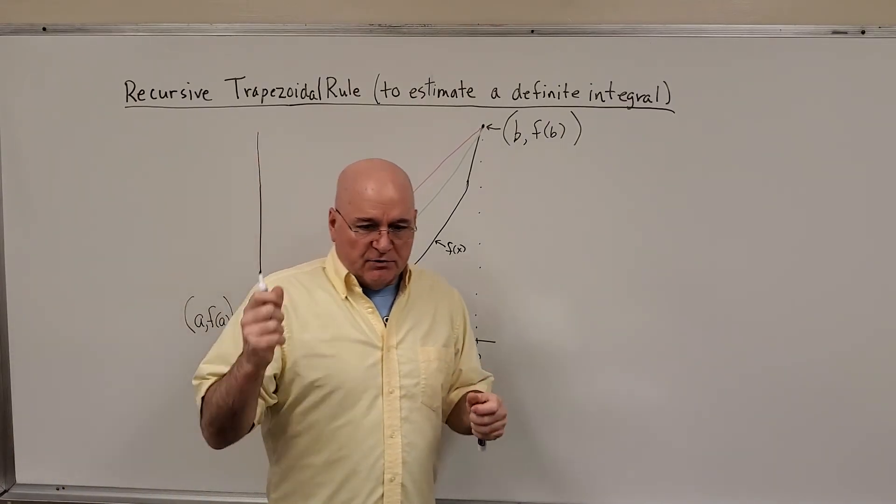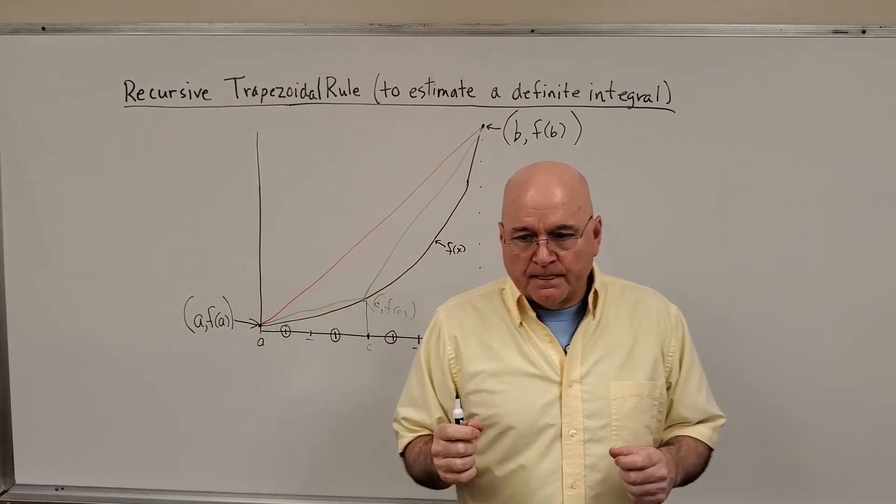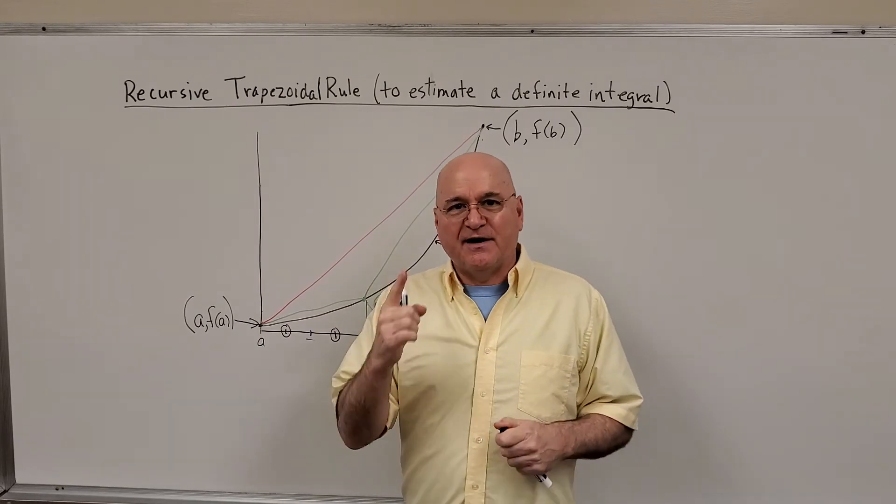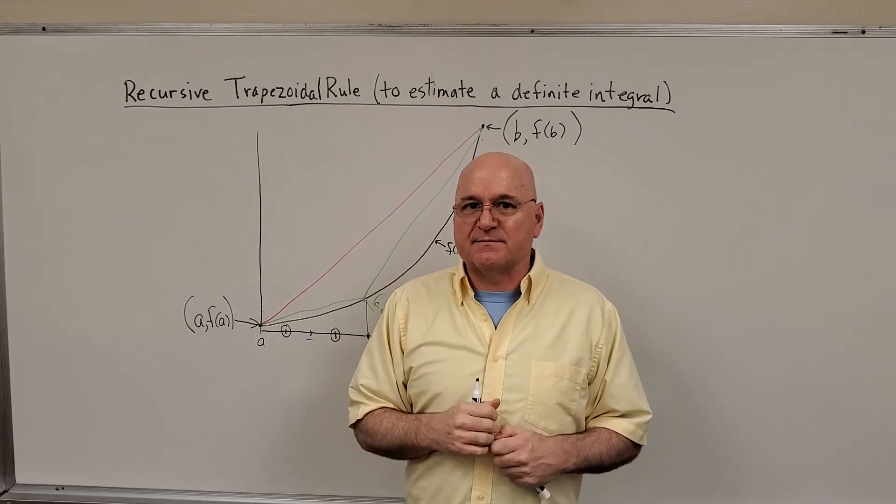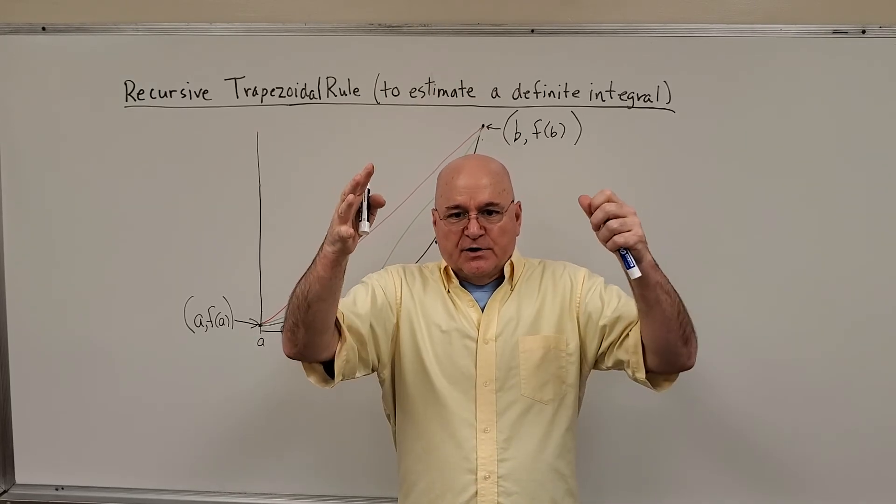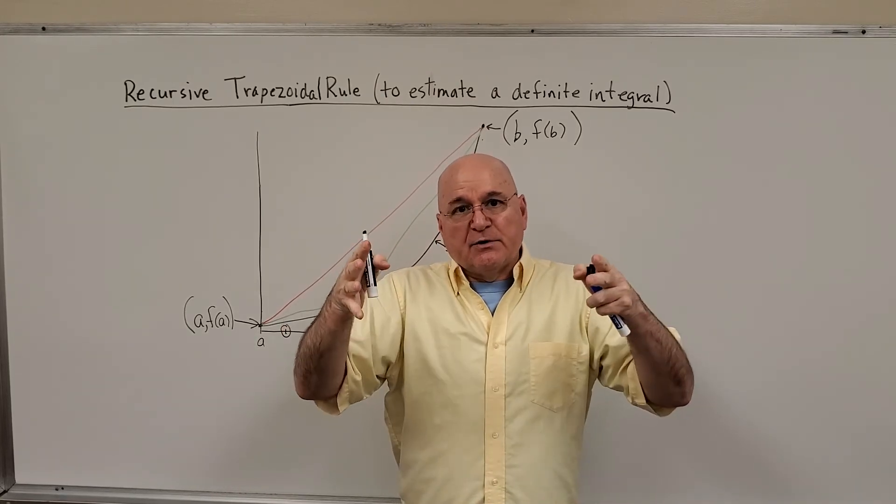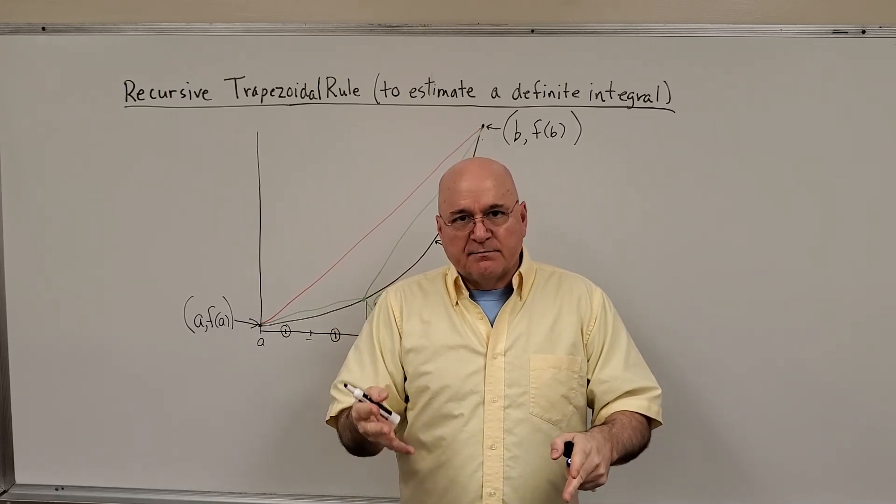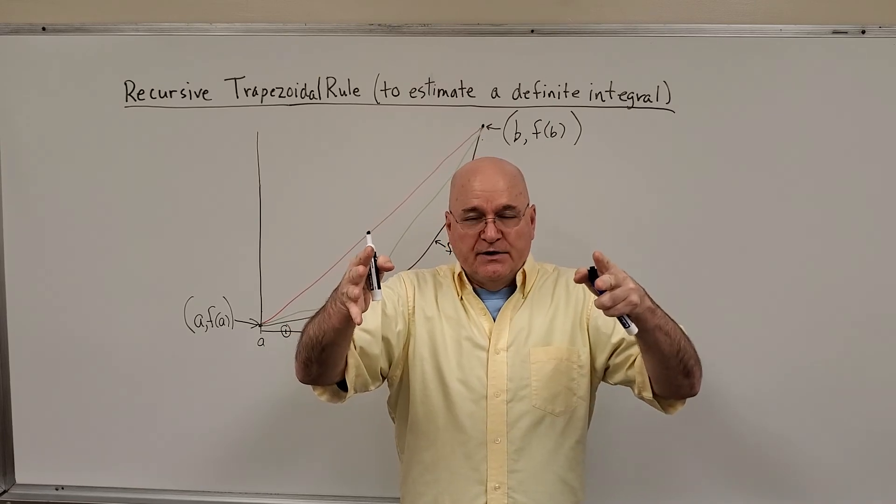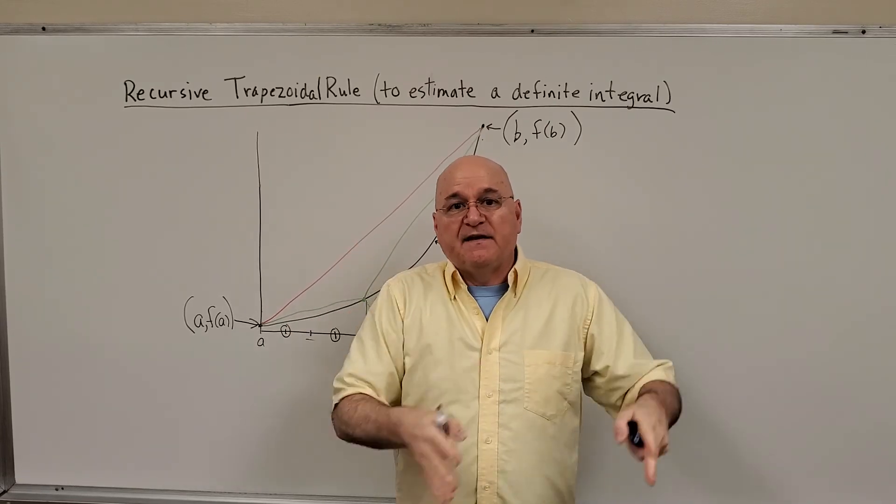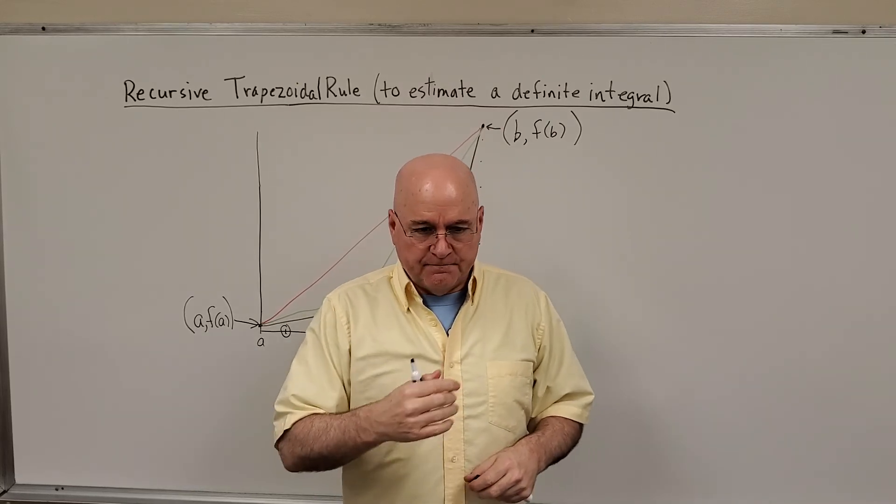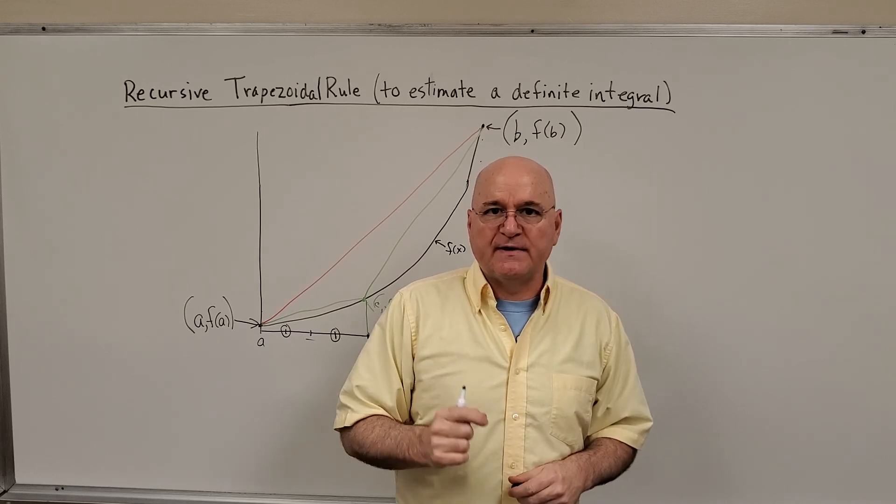So in our pseudocode, which we're going to do in the next video, you're going to see that we compute one trapezoid, the area of one trapezoid. That's our first estimate. And then inside a loop, we're going to double the previous number. So we're going to go from one in the loop, we're going to go to two. Use two trapezoids, compute the area. Come back up, we'll use four intervals, or sections in the interval, and then eight, and then 16, and so on. And then we'll explain when we can bail out of this loop.